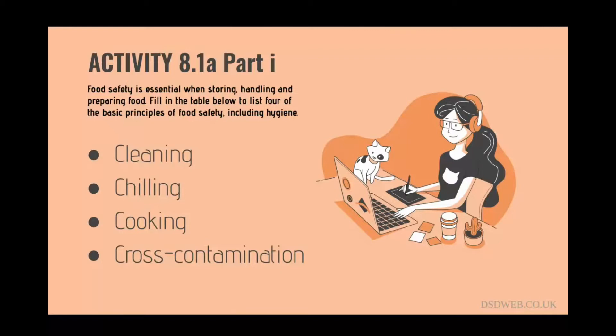Finally, cross-contamination refers to ensuring that different types of food are stored and prepared separately to prevent the bacteria from one food spreading onto another. In addition, surfaces and utensils should be cleaned thoroughly before coming into contact with different foods.